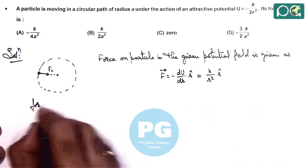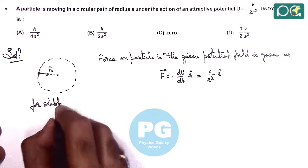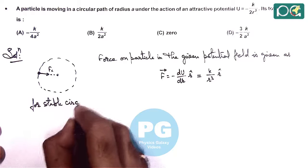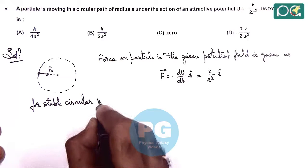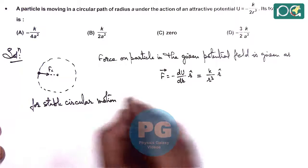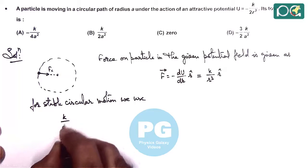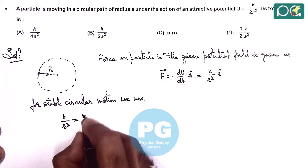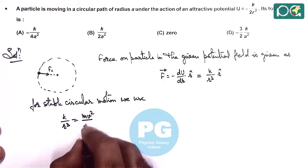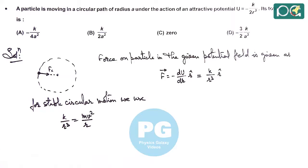For stable circular motion, K/R³ should provide the centripetal force, so K/R³ = mv²/R.